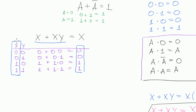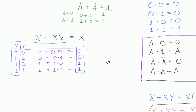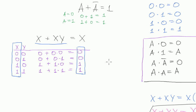We knew that already, but this idea of putting all the possible values and calculating all the possible outputs is called truth tables. That's very useful, and it's some kind of an alternative to simplifying an expression — and sometimes it's much more useful than simplifying.